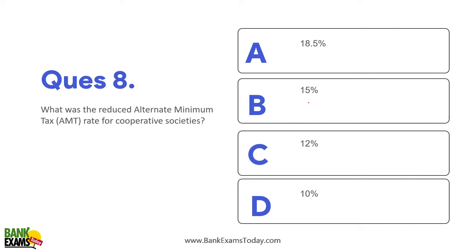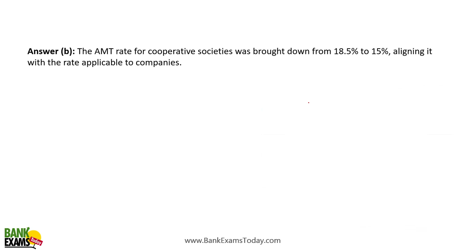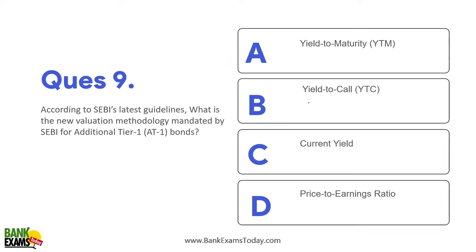What was the reduced alternative minimum tax rate for cooperative societies, recently updated? It is now 15%. Previously it was 18%.